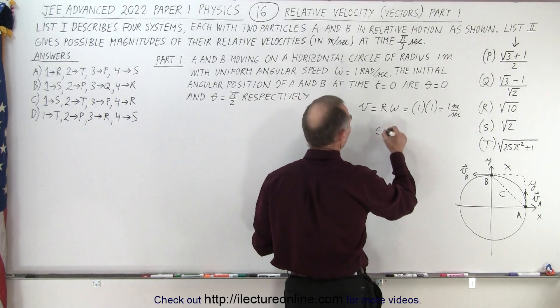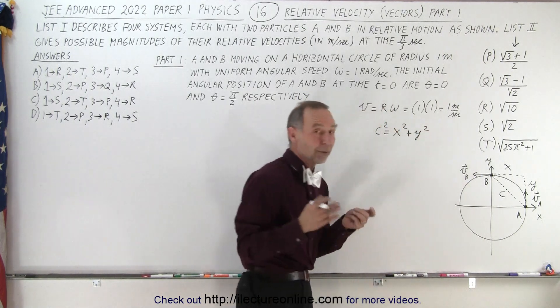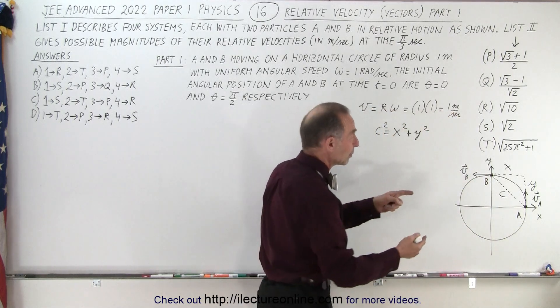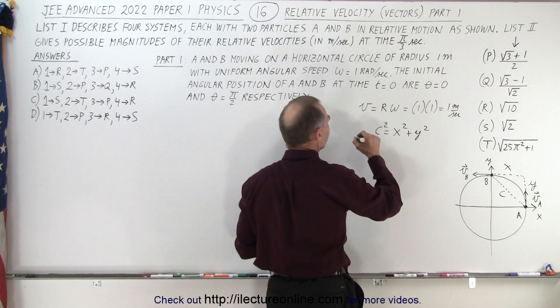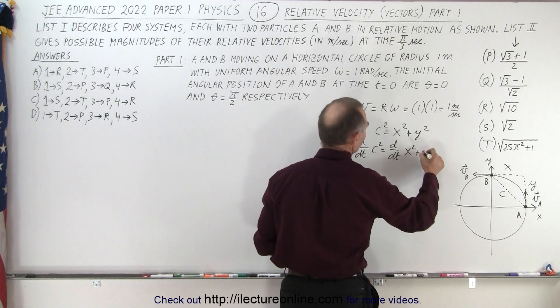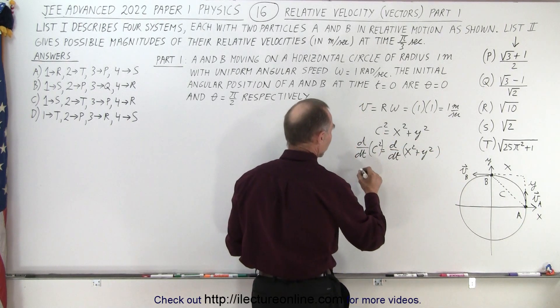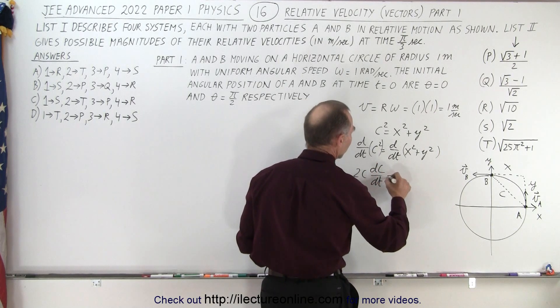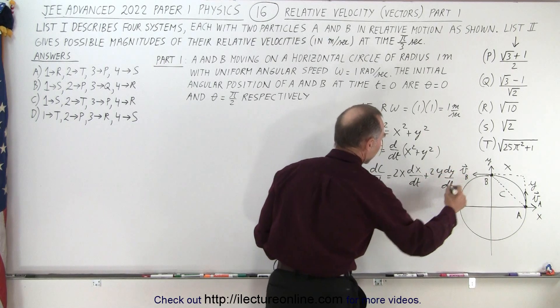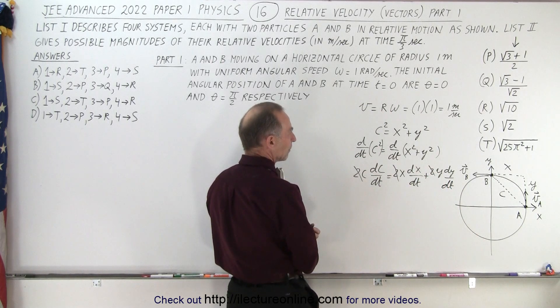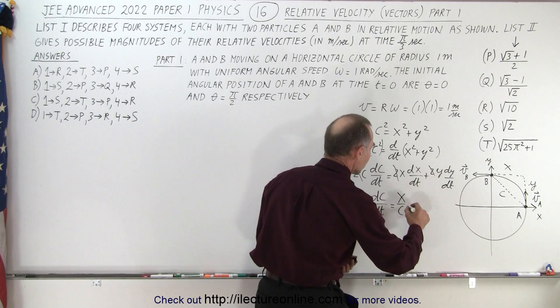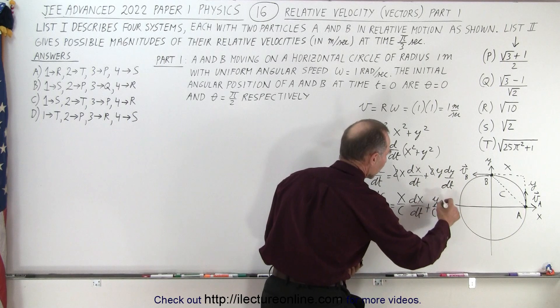So what you could do is say C squared equals X squared plus Y squared, and then take the derivative of both sides with respect to time. We're looking for dC/dt, the relative velocities between A and B. So d/dt of C squared equals d/dt of X squared plus Y squared. This becomes 2C dC/dt equals 2X dX/dt plus 2Y dY/dt. We get rid of the twos and divide everything by C, so dC/dt equals X/C times dX/dt plus Y/C times dY/dt.